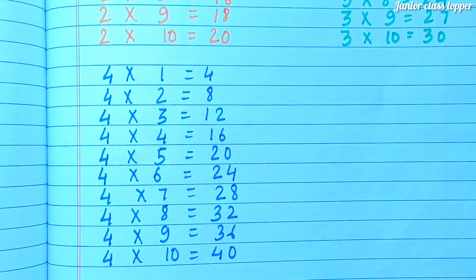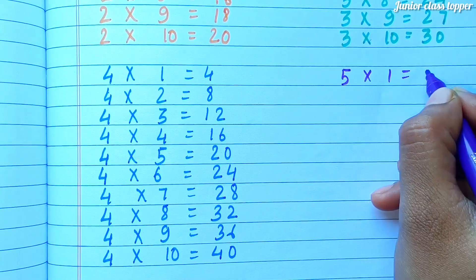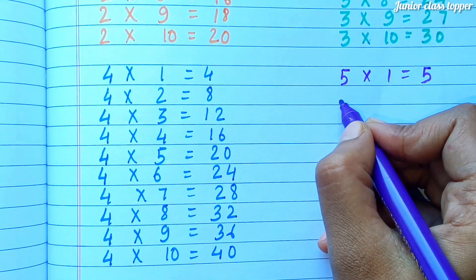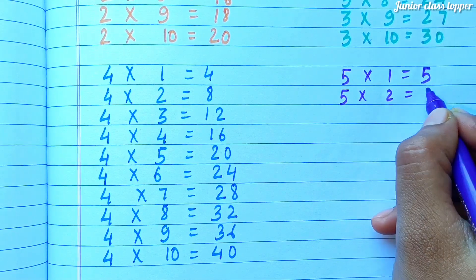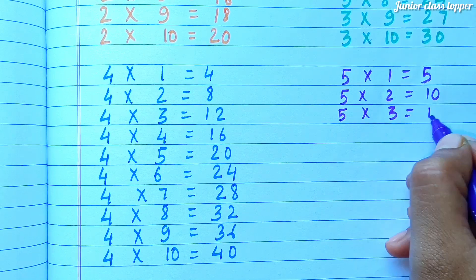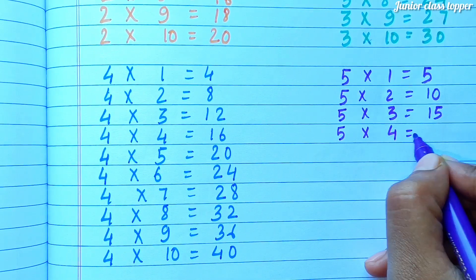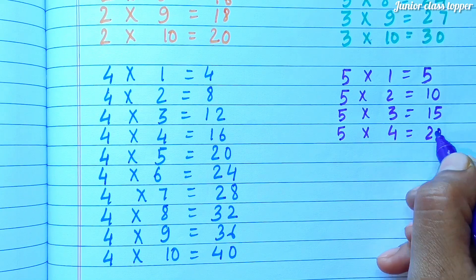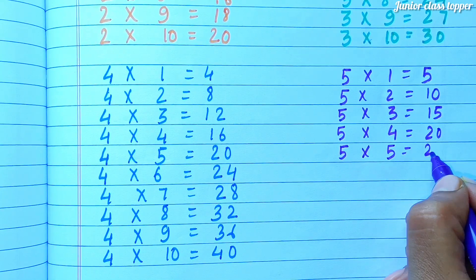Table of 5. 5 1s are 5. 5 2s are 10. 5 3s are 15. 5 4s are 20. 5 5s are 25.